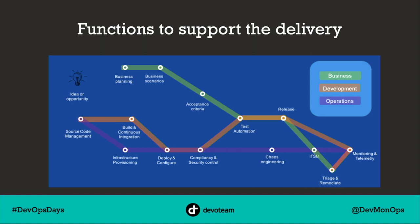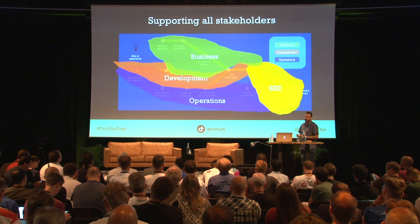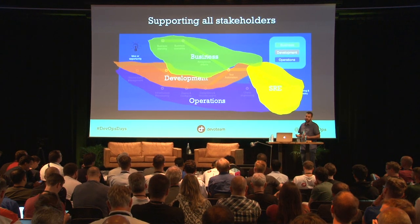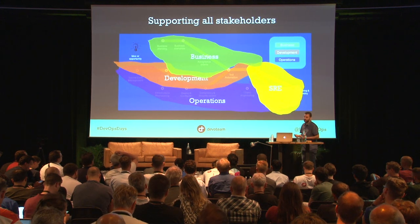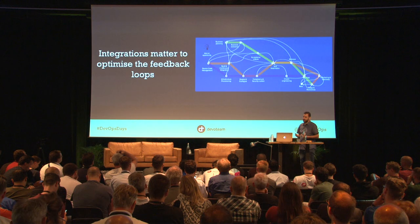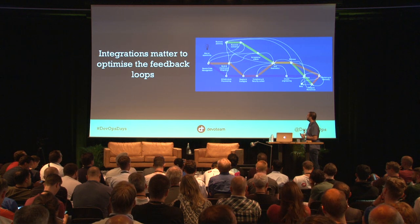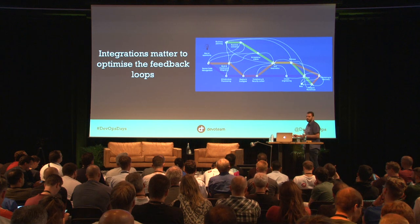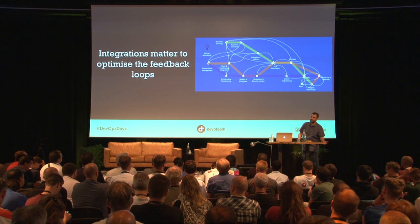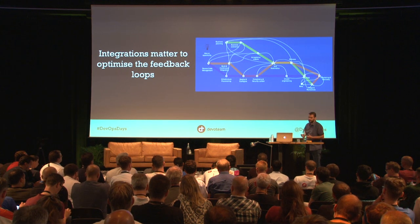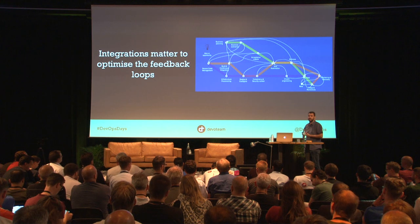Now we see the tools and how to define it — all the functions in different areas coming together. The business has its own area, development, operations. But how are we going to support all these stakeholders? They have overlapping areas and are delivering value goals for the company. The integrations matter to optimize all the feedback loops in your chains — going from financial planning to acceptance criteria to your build area, to your testing, to your source code repository.